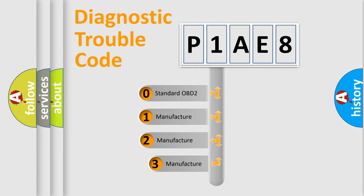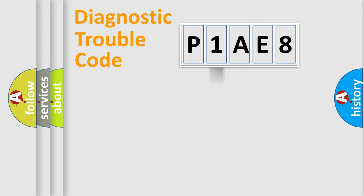If the second character is expressed as zero, it is a standardized error. In the case of numbers 1, 2, 3, it is a more precise expression of the car specific error.